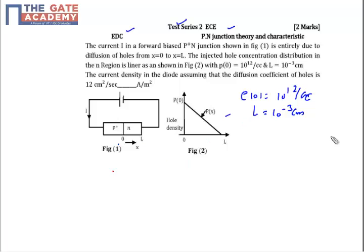You know that the current density is Jₚ = q × Dₚ × (ρ₀ - ρₓ) / L. This is the standard formula where the charge q is the charge of the electron, 1.6 × 10⁻¹⁹. Dₚ is the diffusion constant which is given to us as 12.